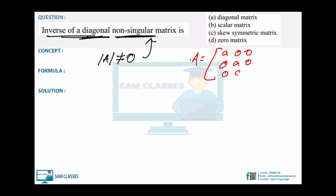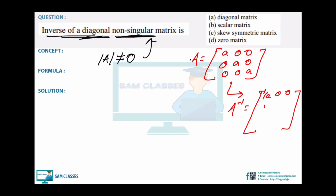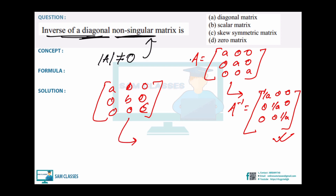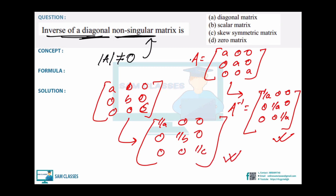If you have a diagonal matrix [[a,0,0],[0,a,0],[0,0,a]], its inverse is directly [[1/a,0,0],[0,1/a,0],[0,0,1/a]]. More generally, for diag(a, b, c), the inverse is diag(1/a, 1/b, 1/c). You can use this trick directly in all such questions.